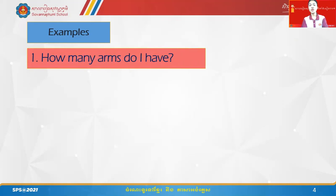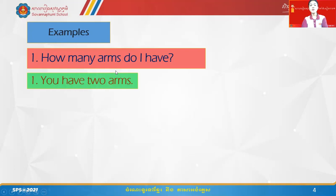You can also use does with he, she, it. But for example number one: How many arms do I have? Look at me — what is the difference between he/she/it with does, and I/you with do? Arms has an S. You ask about yourself using I, and someone answers: You have two arms.